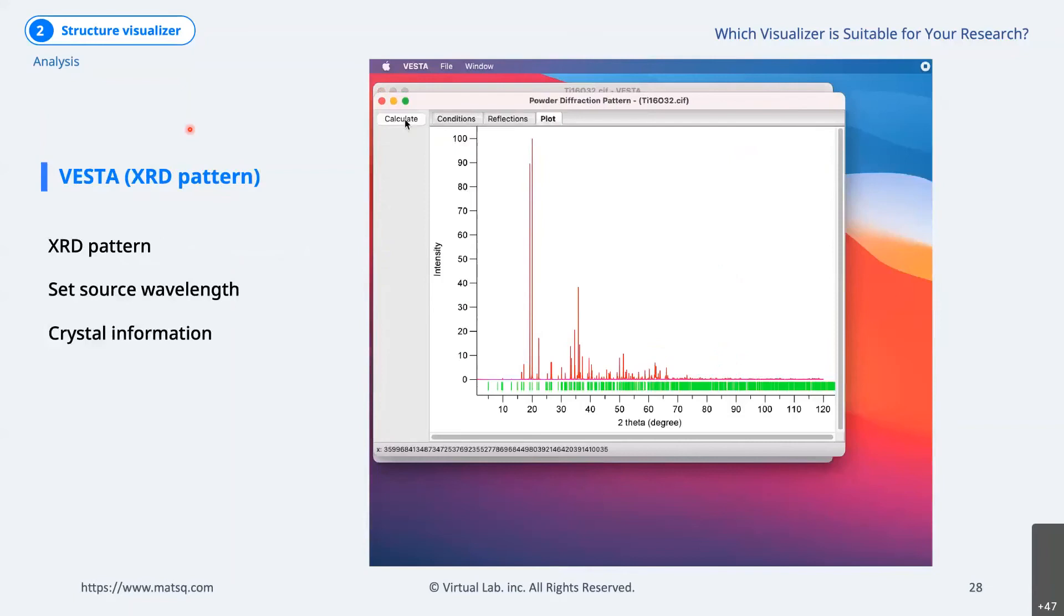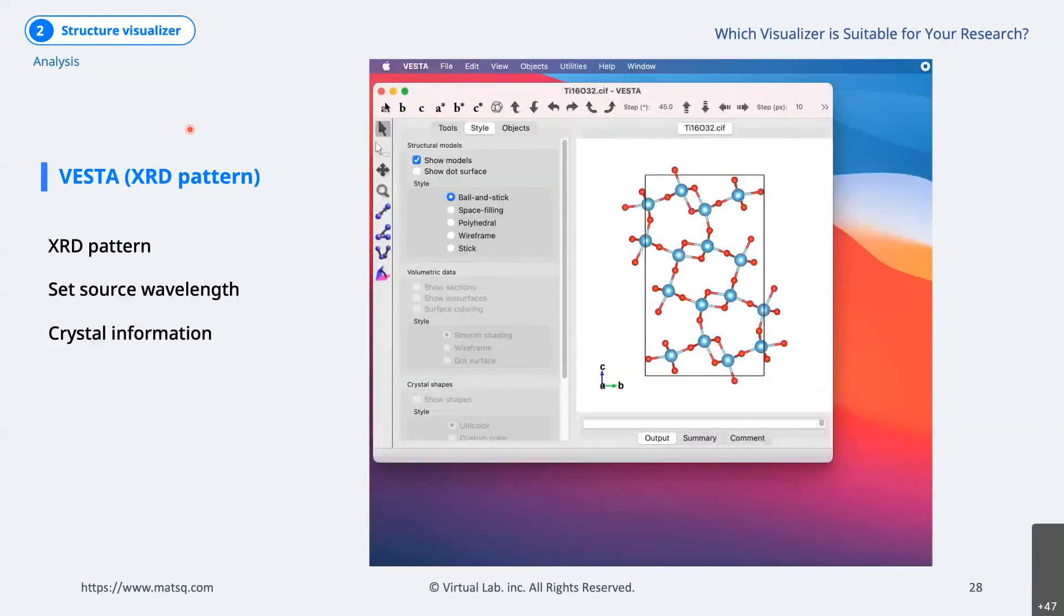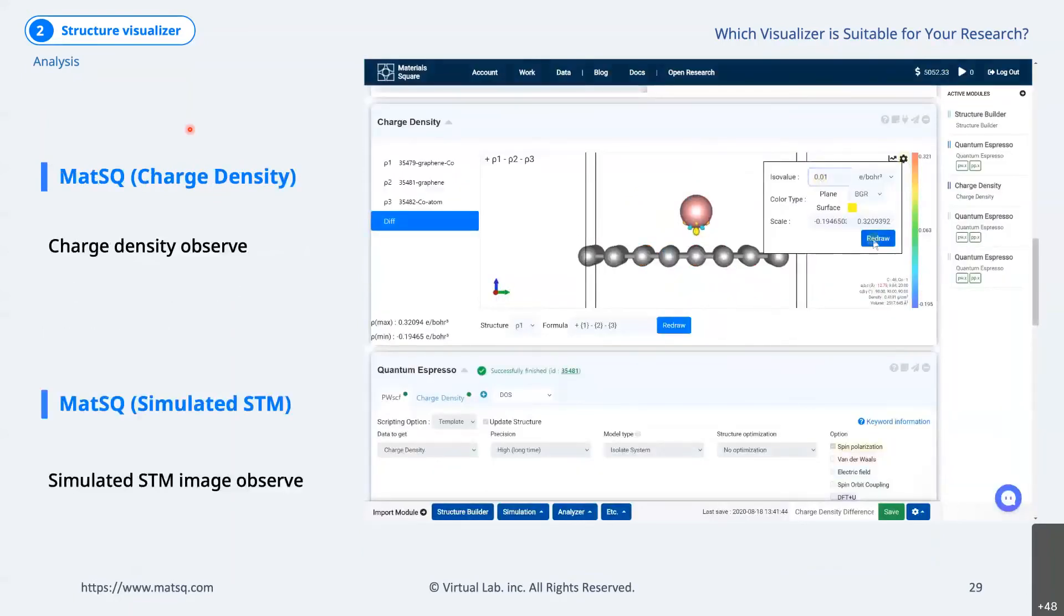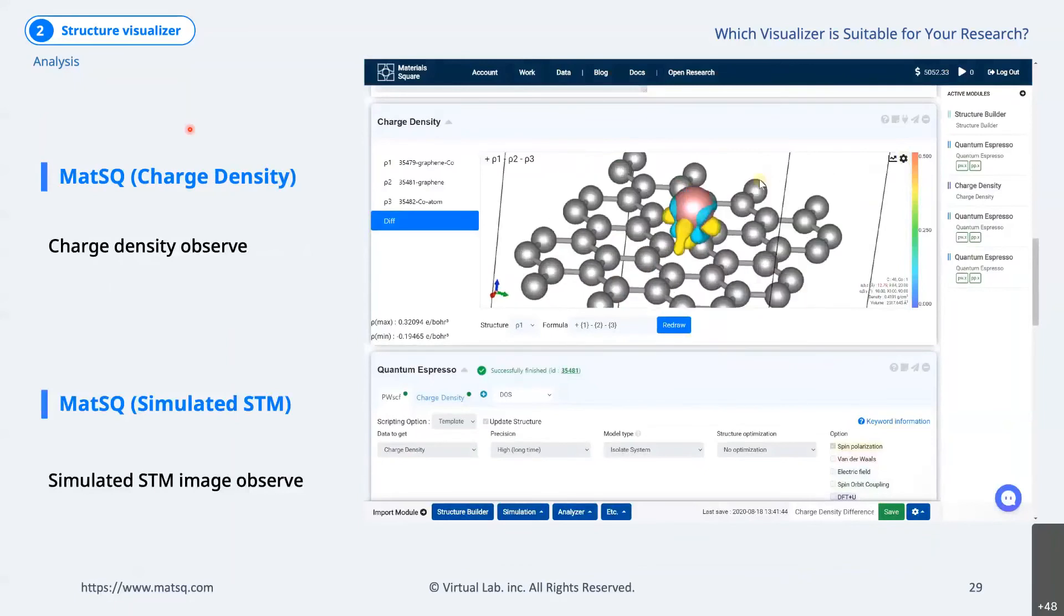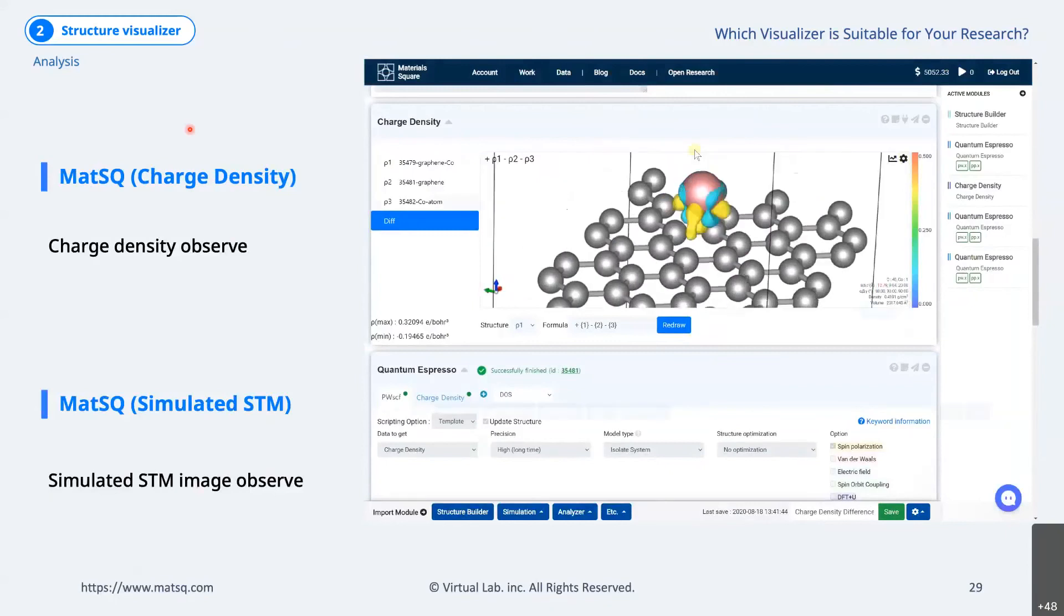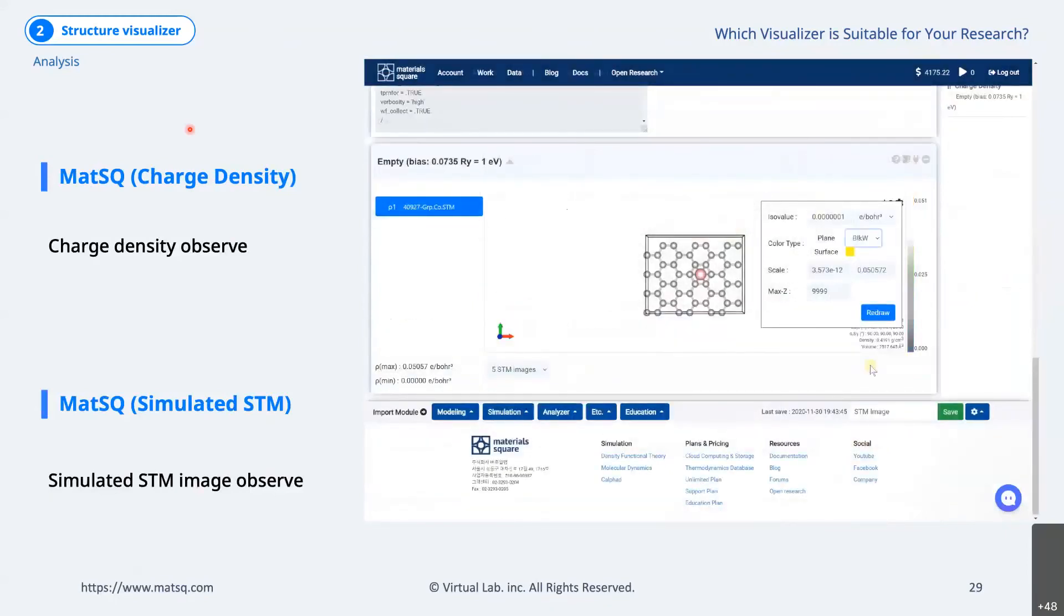In addition, VESTA specialized in electronic structure analysis provides several functions of XRD. The XRD pattern provides the X-ray pattern of crystal structure. Finally, Materials Square visualizes and displays the electronic structure so that the characteristics of the electronic structure can be easily analyzed. In addition, in Materials Square, STM images can be obtained through electronic structure characteristic analysis.